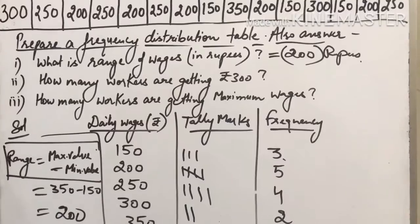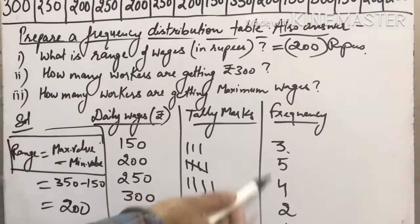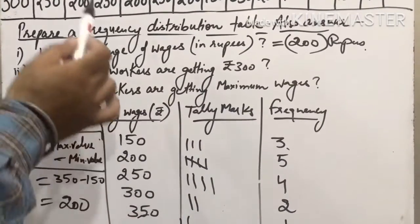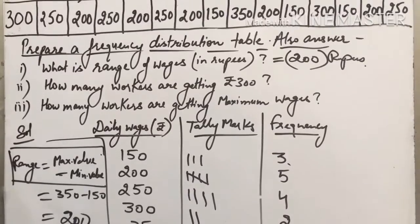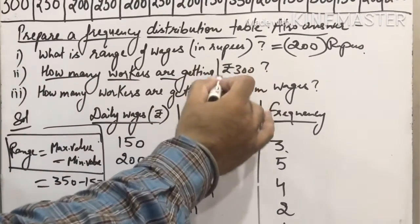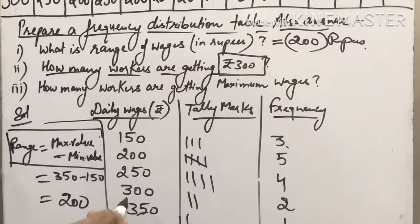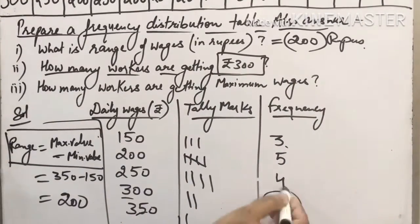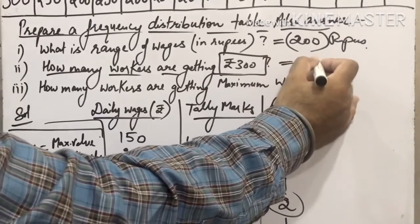Is it clear? You should remember the range formula: maximum value minus minimum value. Remember to apply it to the maximum value in the question, not to the frequency. Now second part: How many workers are getting 300? Look at the table and tell me—how many workers get 300? Two. So the answer is two workers.